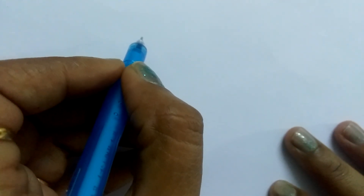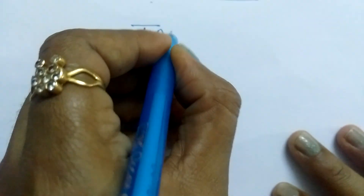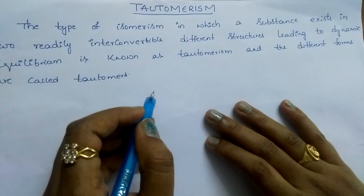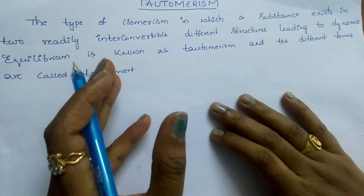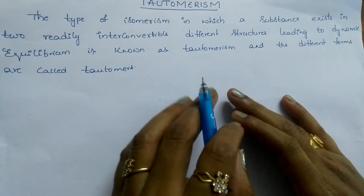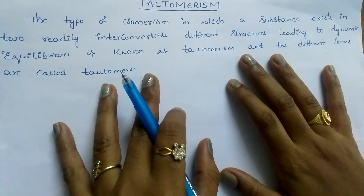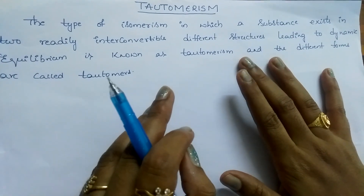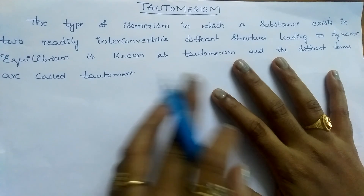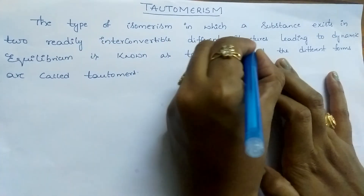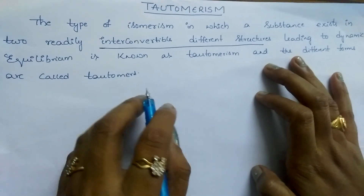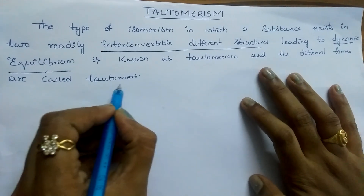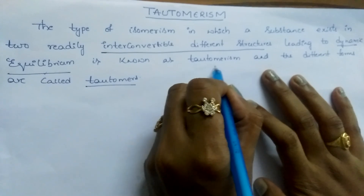Hi students, today I am going to explain you about tautomerism. Tautomerism is one of the structural isomerisms. Here the isomers are in dynamic equilibrium with each other and this isomerism is due to the migration of a hydrogen atom from one polyvalent atom to another polyvalent atom. Tautomerism is the interconversion of different structures because of the migration of a hydrogen atom, and it leads to dynamic equilibrium. These isomers we call tautomers, and this phenomenon we call tautomerism.